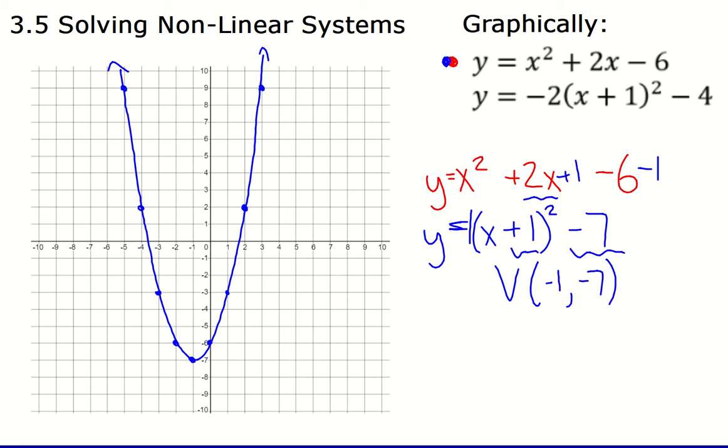The second quadratic, then, I'm going to graph on the same set of axes. So the second quadratic is already in vertex form, and I can see that the vertex here is going to be negative 1, negative 4. And I can place that vertex. And then in this quadratic, the A value is negative 2, which means instead of going over 1 and up 1, I'll go over 1 and down 2.